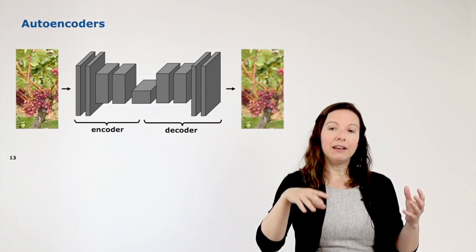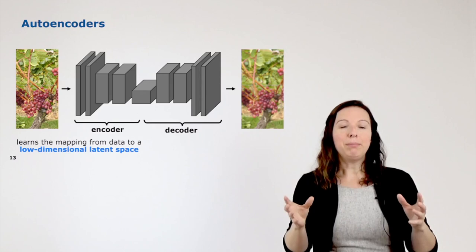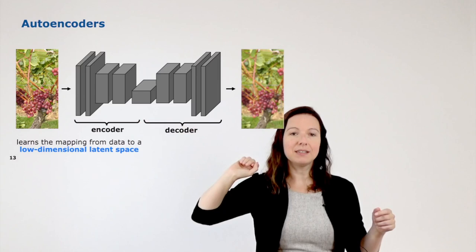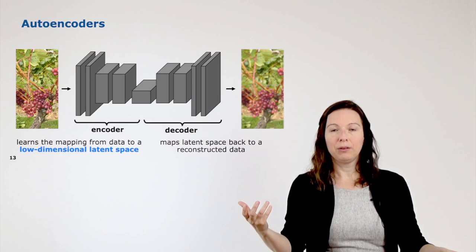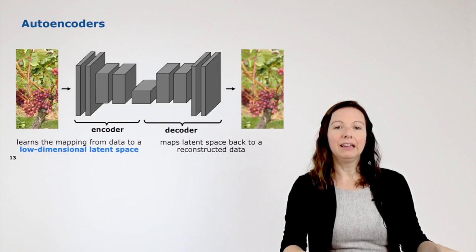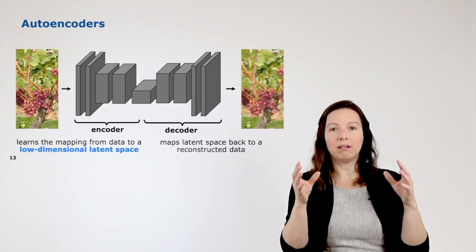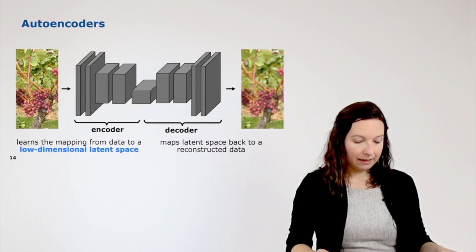An auto encoder consists of an encoder and a decoder. The encoder learns the mapping from the data to this low-dimensional latent space, and the decoder maps the latent space back to the output. In this case we want to have our data reconstructed — in the best case you want to have your input data again. The encoder and decoder can take many forms; in our case here we use a neural network.